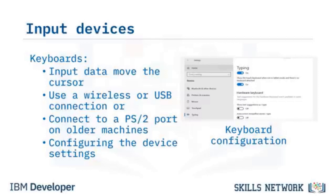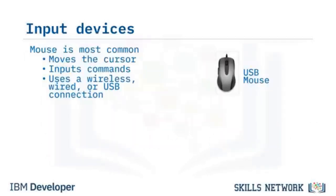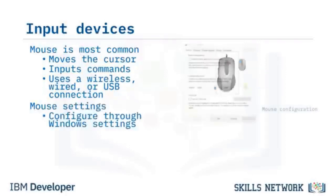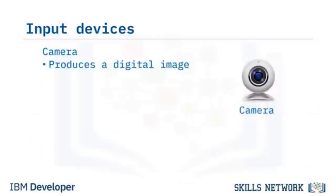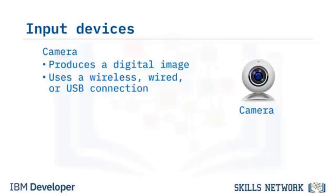The most used input device is the mouse, used to input data and move the cursor. A mouse generally connects via USB (wired) or Bluetooth (wireless). You can change mouse settings such as cursor size in Windows Settings. Touchpads are most often built into laptops but external touchpads can connect via USB or Wi-Fi. The camera is another input device producing a digital image, connecting via USB or Bluetooth.